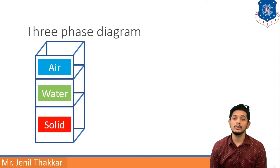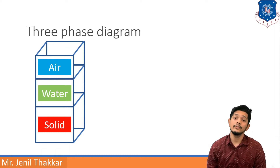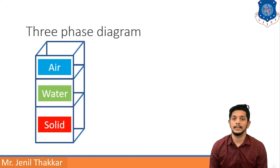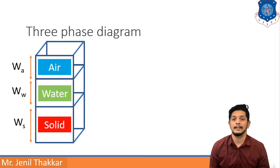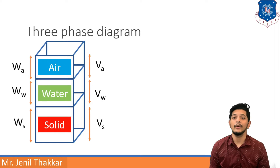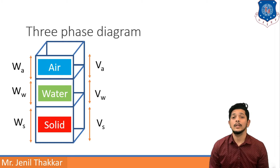Soils have different index properties. To understand these index properties we go through the three-phase diagram of soil. If we take any soil sample in its natural state there will be three phases. Ws means weight of solid particles, Ww means weight of water, and Wa is weight of air. Similarly, Vs is volume of solids, Vw is volume of water, and Va is volume of air. After measuring weight and volume we can derive the index properties.